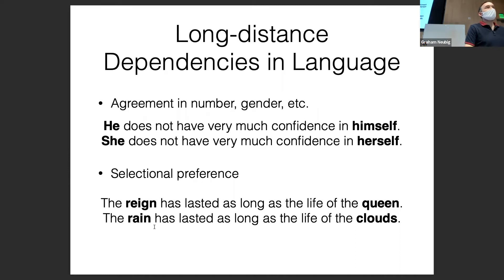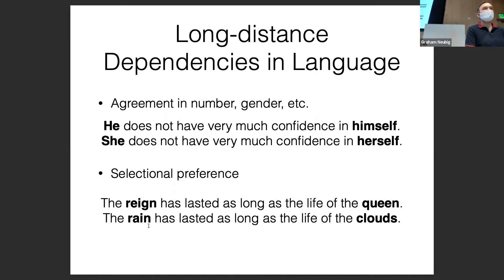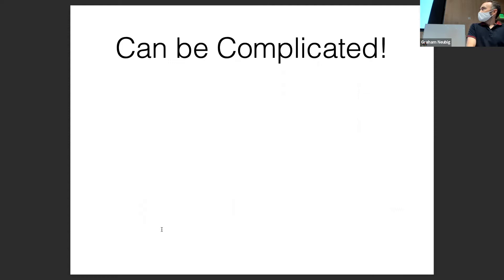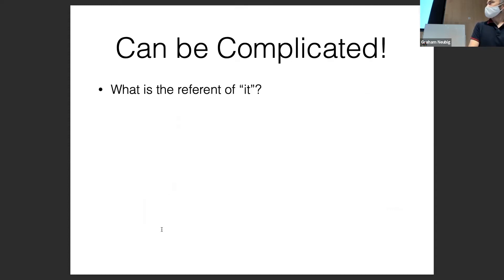N-gram models wouldn't be able to handle these long-distance dependencies if n is shorter than the sentence length, and they would be very poor even with longer n because they're not well suited for modeling these kinds of phenomena. These long-distance dependencies can also be relatively complicated, so it's not necessarily as simple as coming up with a simple engineering solution.